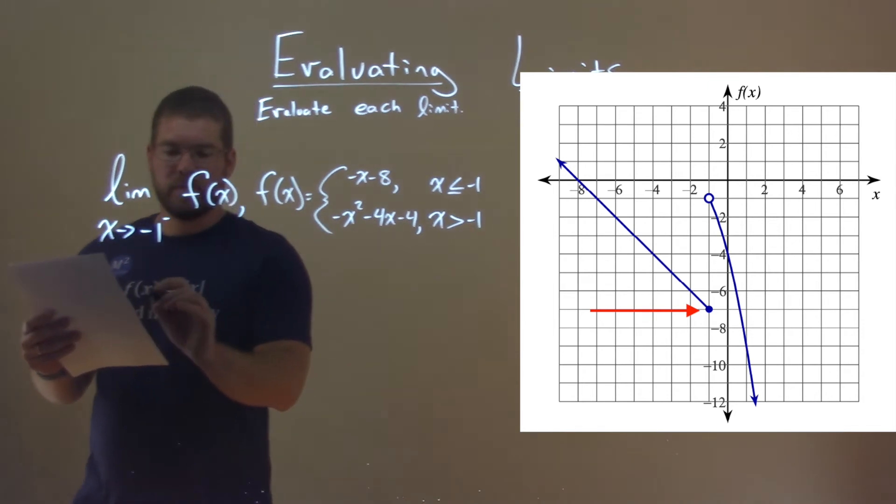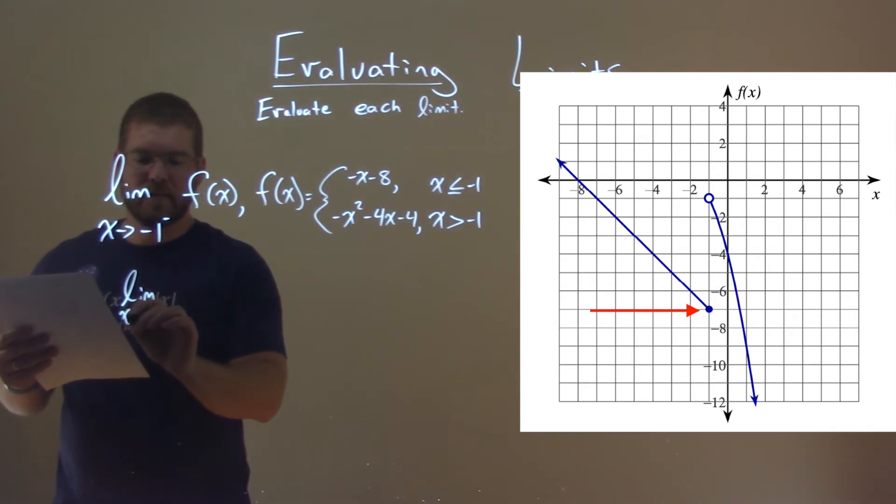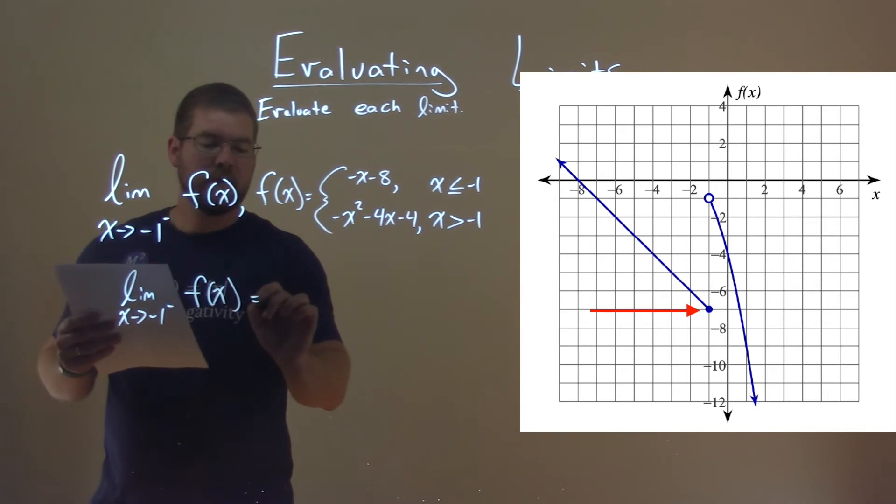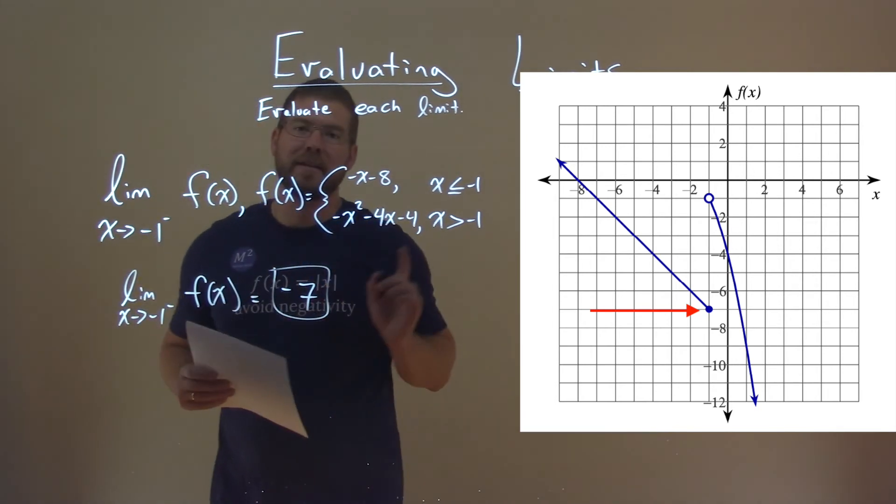And so our limit here, I'm going to rewrite this. Limit as x approaches negative 1 from the left of f of x is equal to negative 7, right there.